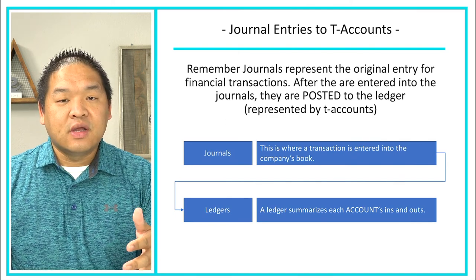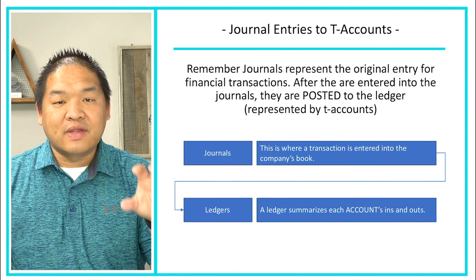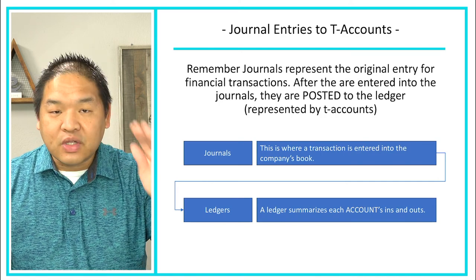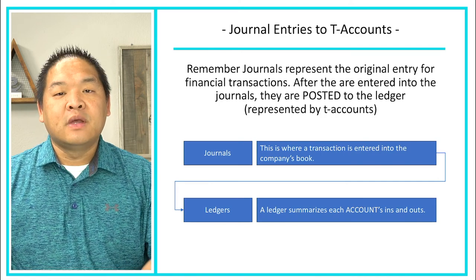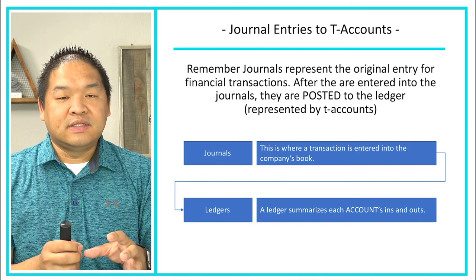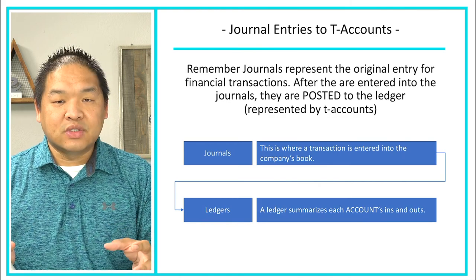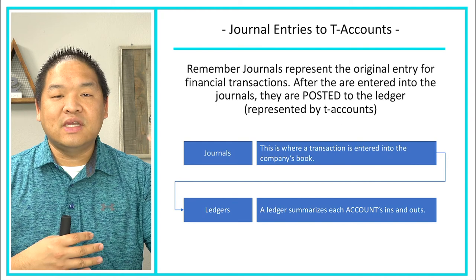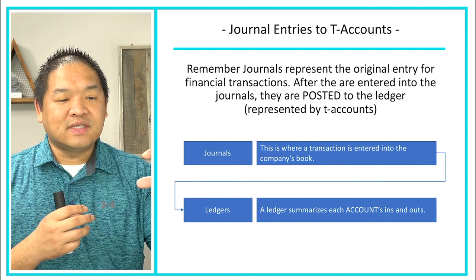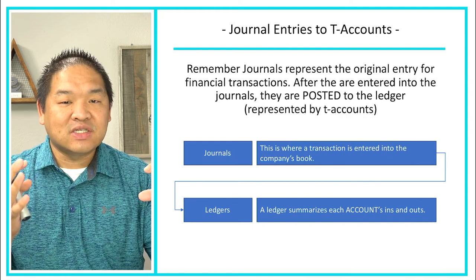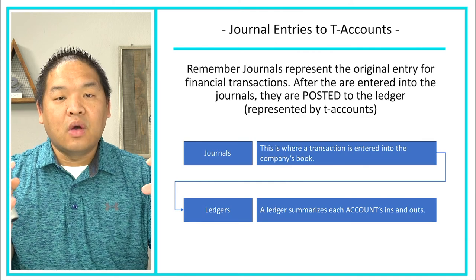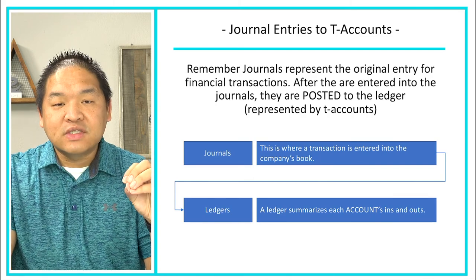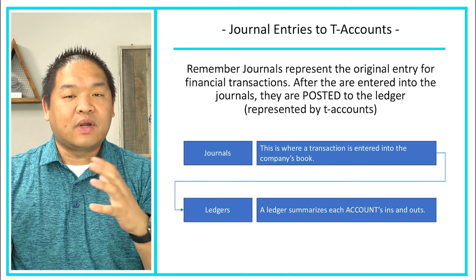The ledger is different from the journal in that the journal is just all the entries — you just book everything there. The ledger, on the other hand, is organized by accounts. So if we book a debit to cash and a credit to accounts receivable, the question is how do we know how much cash is in our cash account? We have to post that — we have to take that entry, break it apart, and post them to their separate accounts.